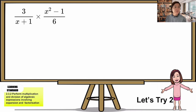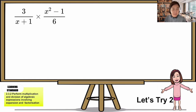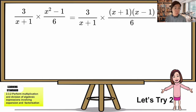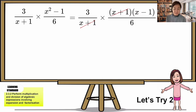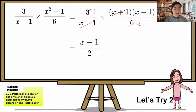Next exercise question: 3 over (x+1) times (x²-1) over 6. The first fraction has no factorization. For the second, x²-1 is a difference of squares, so we factorize to (x+1)(x-1). Now (x+1) appears top and bottom — we simplify. Then 3 and 6 have a common factor: 6 divided by 3 is 2. Final answer: (x-1) over 2.